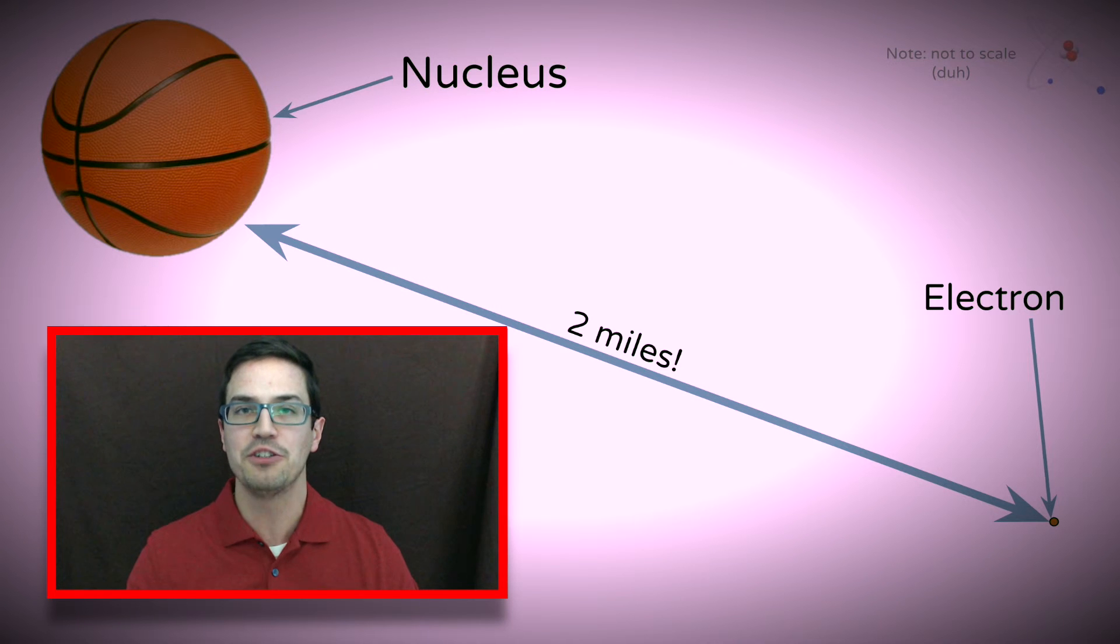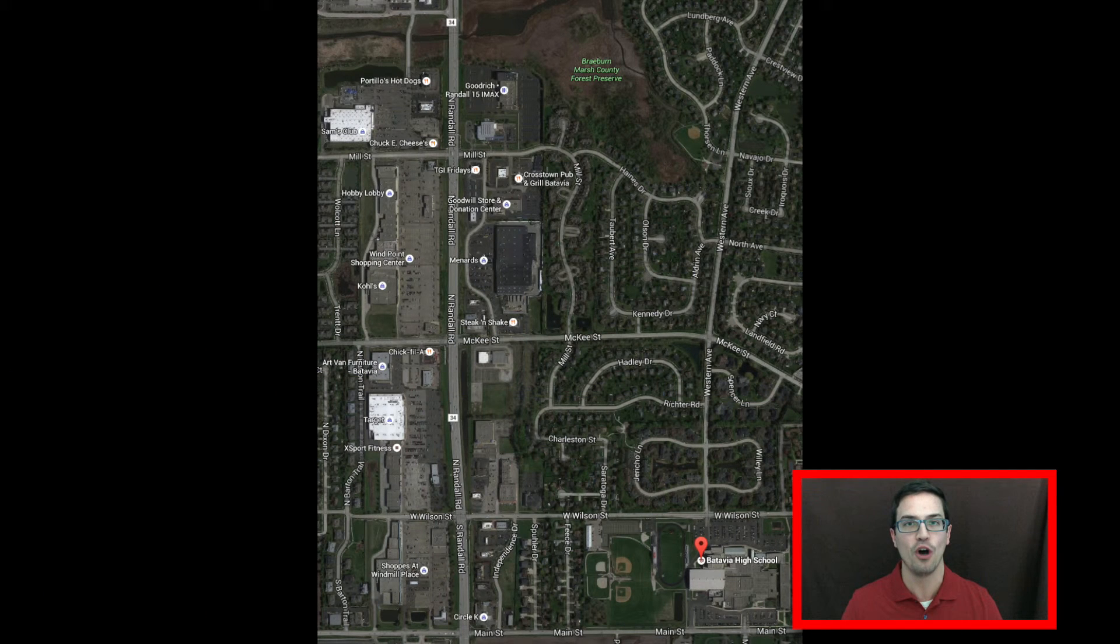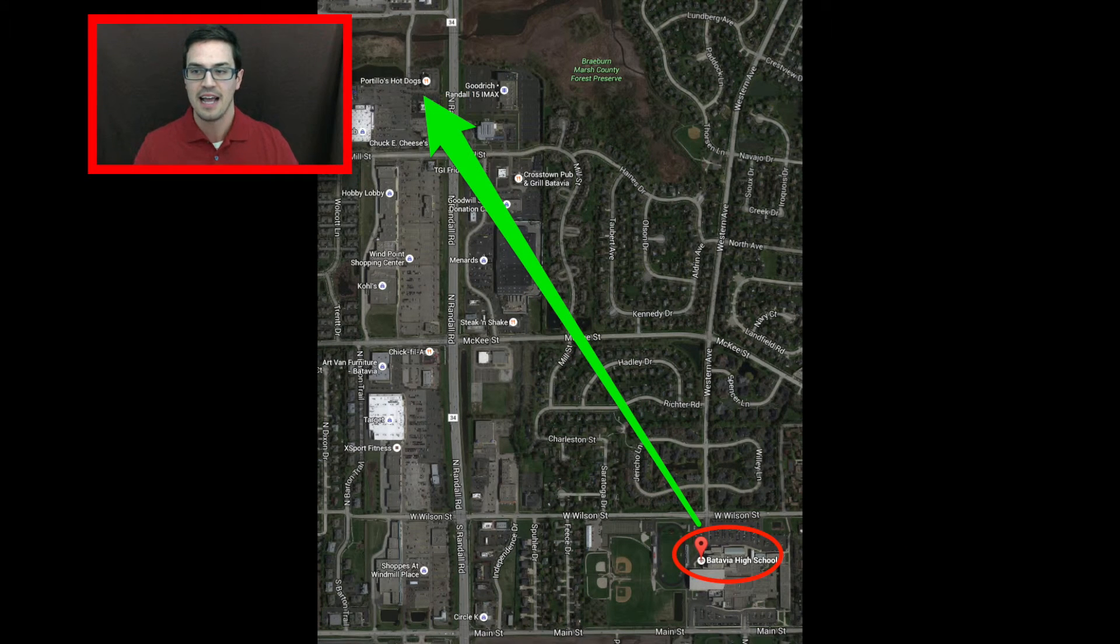This is the reason you cannot make an adequate scale model of the atom. Imagine a place 2 miles away from somewhere you know well. Imagine a basketball at that place and a grain of sand 2 miles away. At 2 miles away, you wouldn't be able to see the basketball or the grain of sand for that matter. If you did a view from above, it would be impossible to get a basketball and a grain of sand in the same view and still have the basketball and grain of sand be visible themselves.